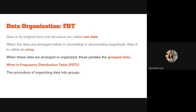Frequency distribution table is a data organization. Data in its original form and structure are called raw data. When these data are arranged either in ascending or descending order, it is called an array. When these data are arranged or organized, they already become grouped data — data that are summarized in tabular form.